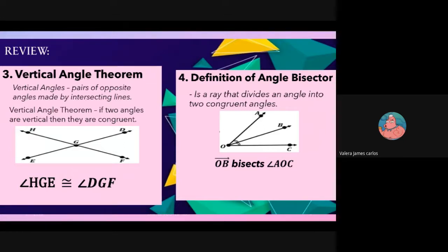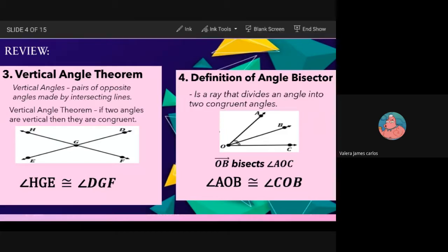Correct! So angle AOC — wait, angle AOB is congruent to angle COB. Because the bisector divided the large angle into two congruent parts, this angle is congruent to the other angle. Hopefully the definition of angle bisector is understood.